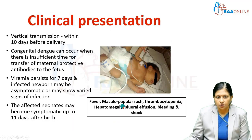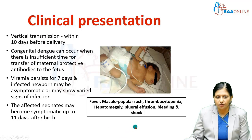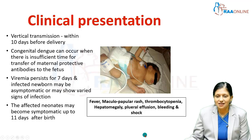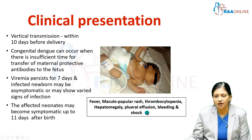A newborn can acquire dengue if the mother had dengue within 10 days of delivery. Congenital dengue can occur when there is insufficient time for transfer of maternal protective antibodies to the fetus. Viremia in the newborn persists for seven days. An infected newborn may be asymptomatic or may show varied signs of infection such as fever, maculopapular rash, thrombocytopenia, hepatomegaly, pleural effusion, bleeding, and shock.